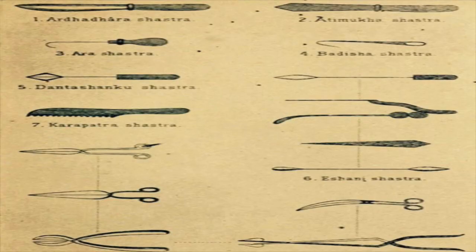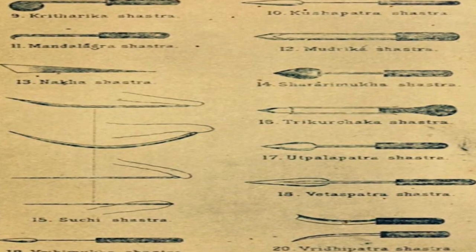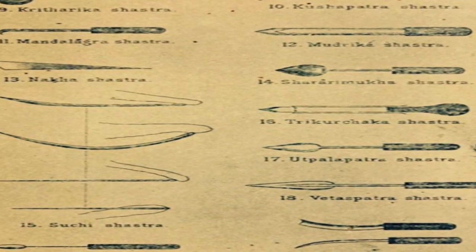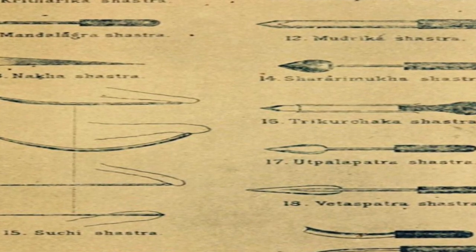Suchi means needle. Maharshi Sushruta has also given the description of different types of needles. Other sharp instruments include: Kuspatra, Atimukha, Sararimukha, Antarmukha, Trikurchaka, Kutharika, Vrihemukha, Vyertaspatra, Bandisham, Dantasanku, Ara, and Esmi. These are the types of Shastra or sharp instruments explained by Maharshi Sushruta. Similar instruments are also available in modern surgery. Maharshi Sushruta has given the concept of Yantra Shastra which is important for surgeons and surgical procedures.